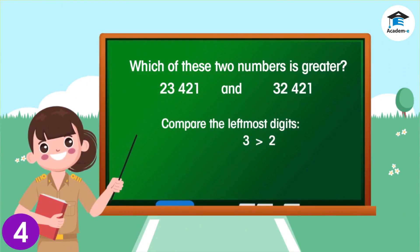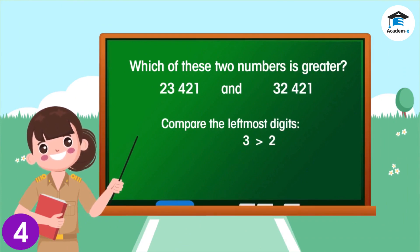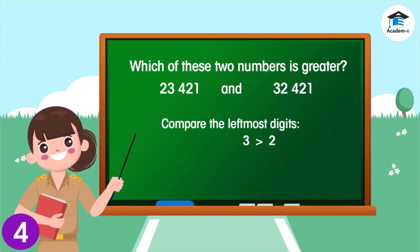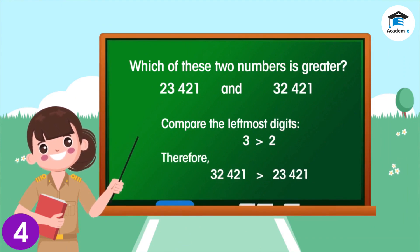If two numbers have the same number of digits, then you'll just have to compare their leftmost digits, or the digits in the highest place value. The number with the higher first digit will be greater.